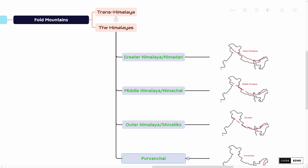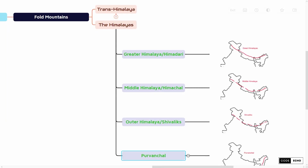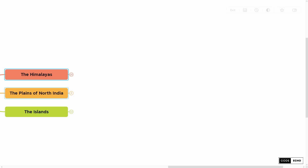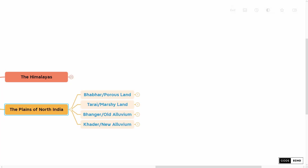So here we have completed the first Indian Physiographic Division. Now let us look at another Physiographic Division, that is the Plains of North India. The Plains of North India are subdivided into four different regions.